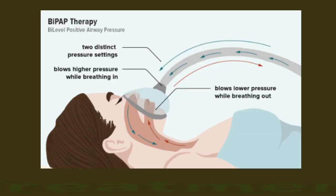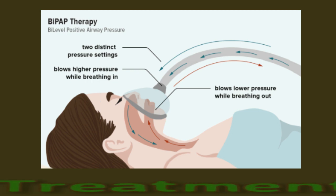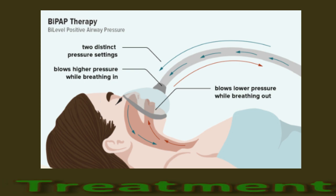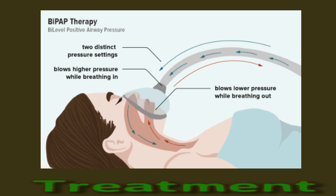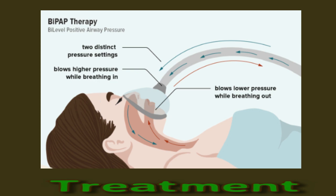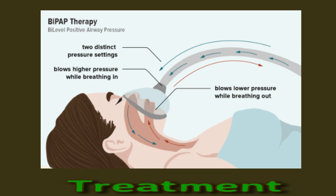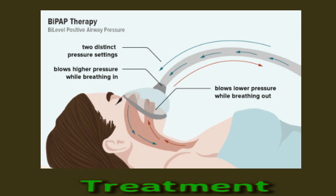Treatment. Managing chronic respiratory acidosis focuses on treating the underlying illness that disrupts the breathing process and exchange of gases. A doctor may also give treatments to improve respiration, including drugs that help open the passages to the lungs. For people with acute respiratory acidosis, doctors can provide non-invasive positive pressure ventilation, called BiPAP.